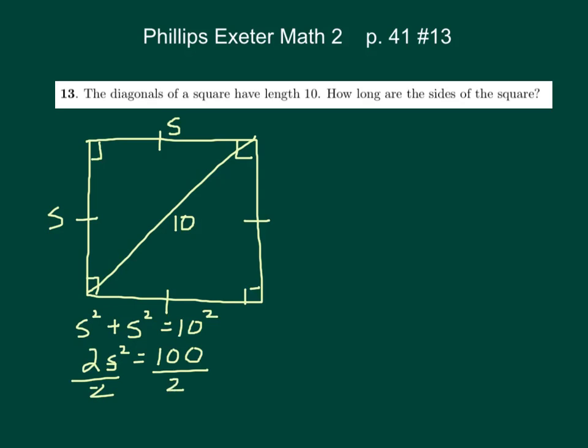So we get S² = 50. We can square root both sides now, and we get S = √50, which is approximately 7.1. This is a pretty straightforward question here.